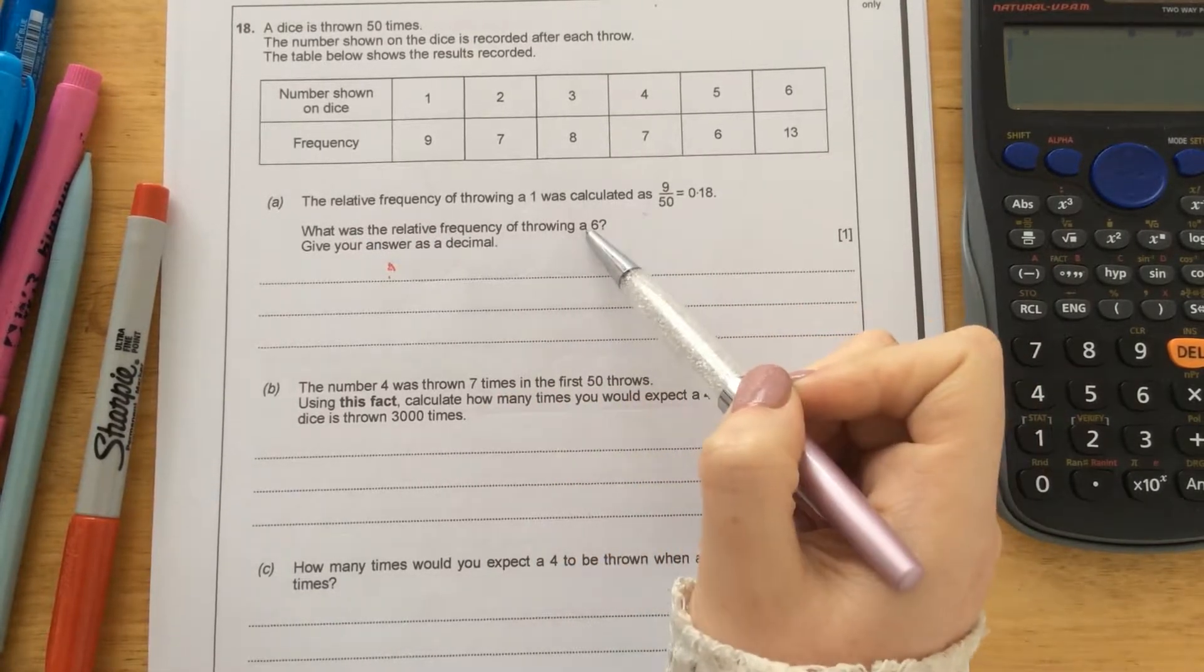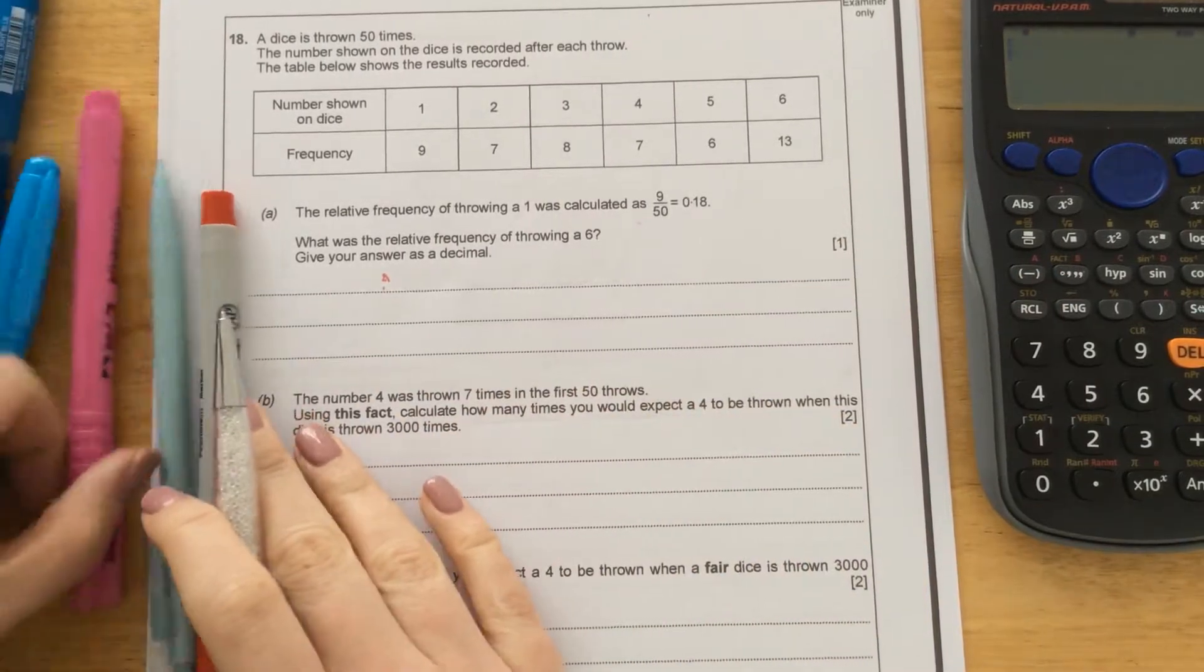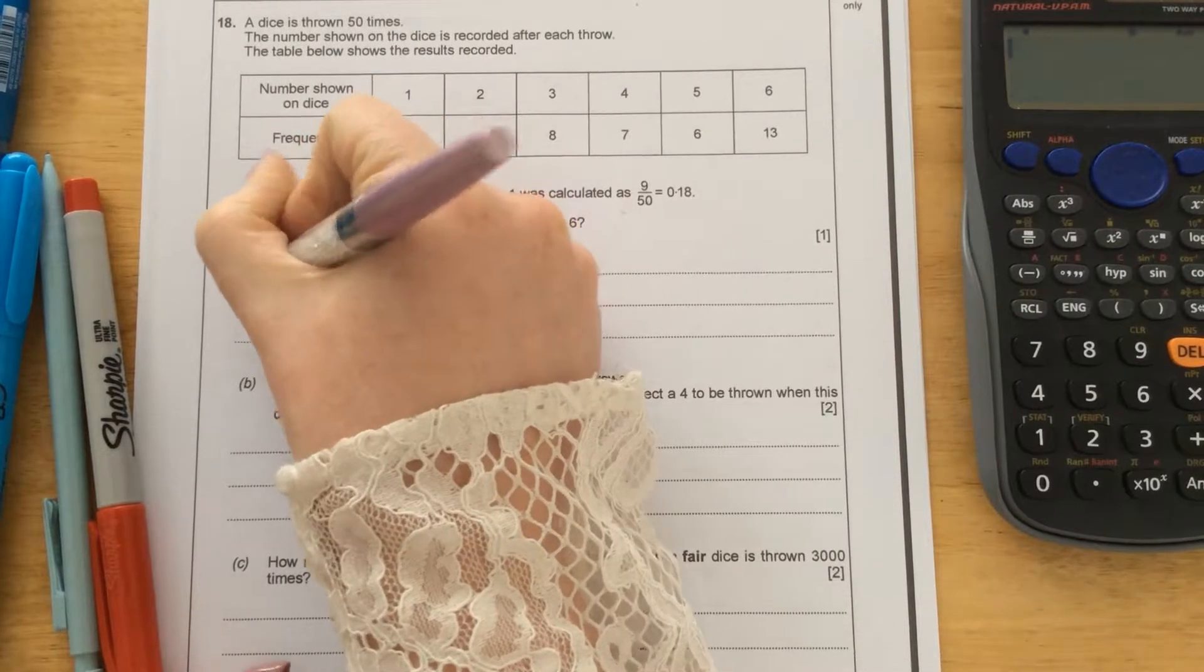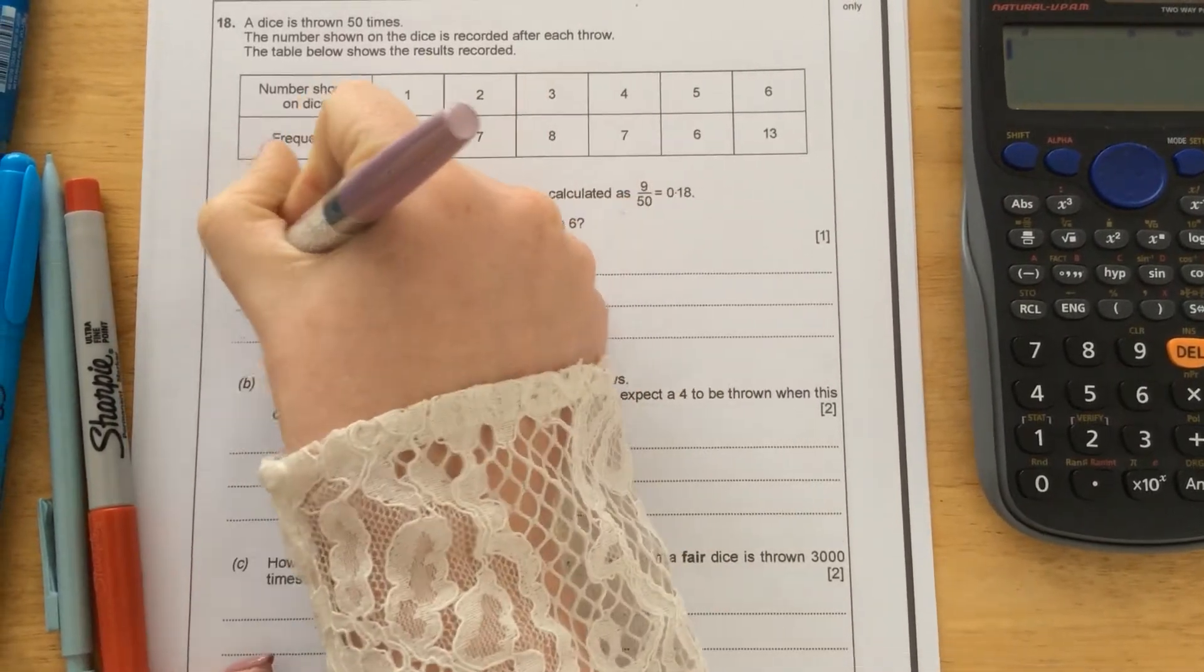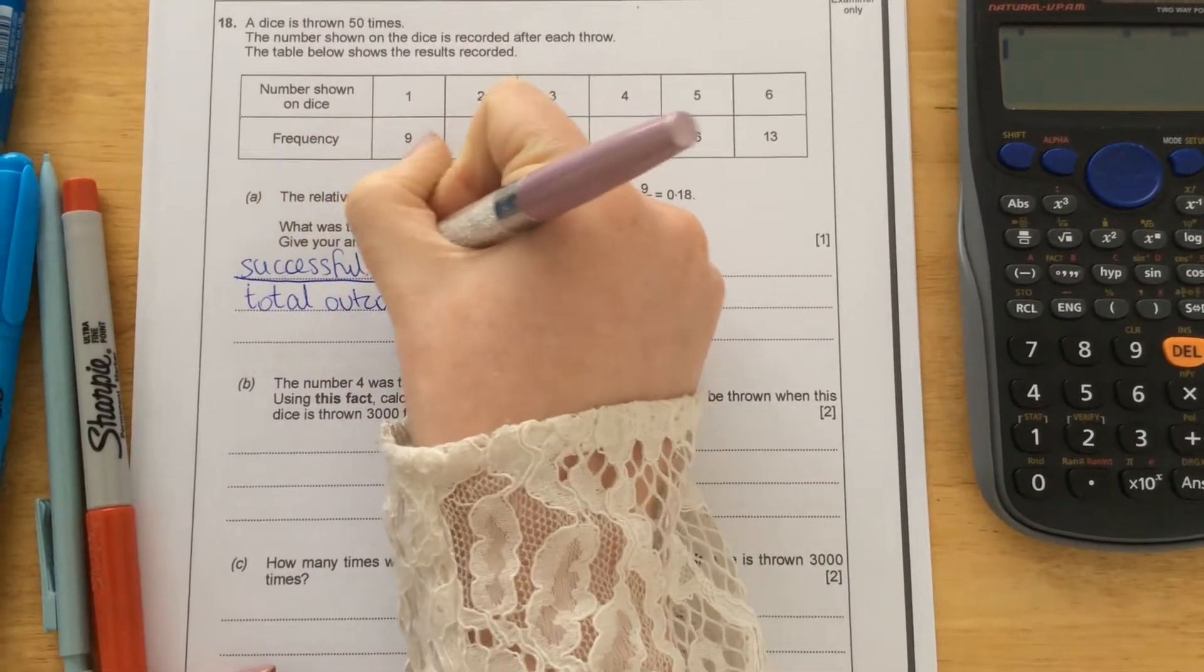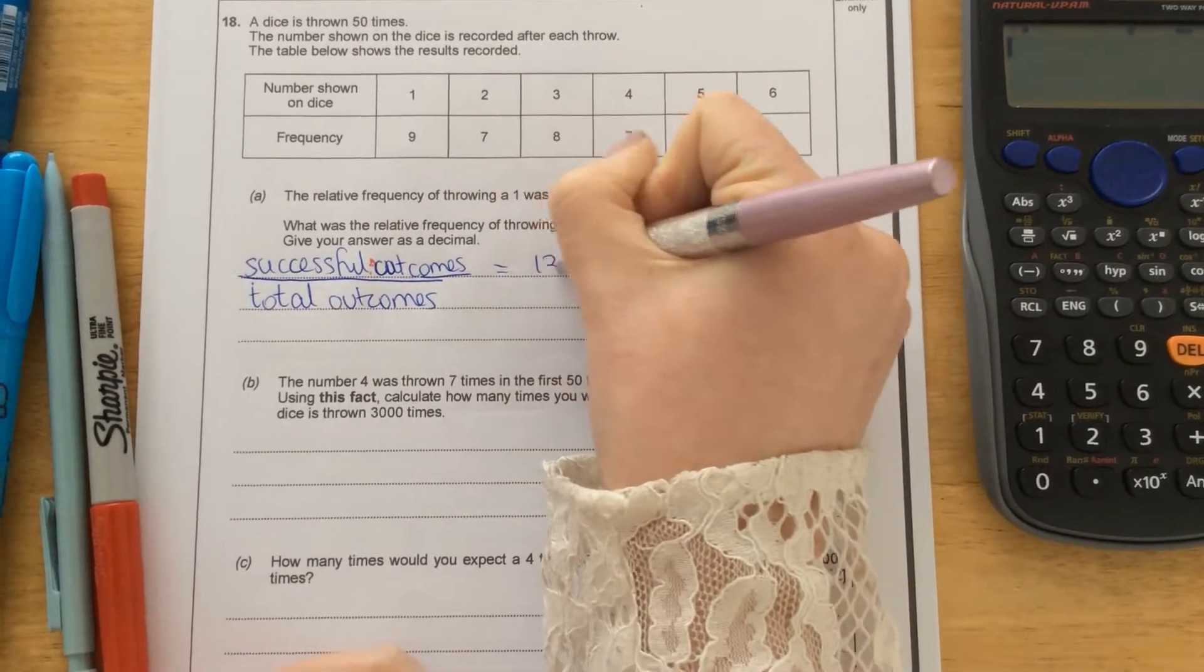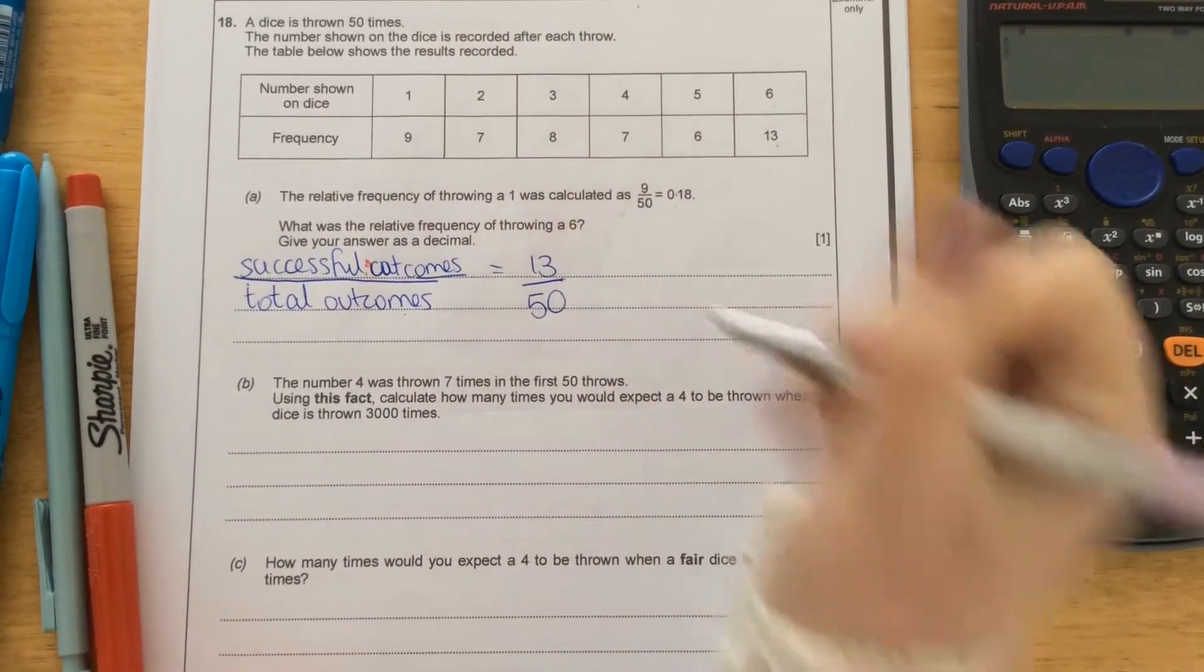What was the relative frequency of throwing a 6? Give your answer as a decimal. So the 6 is here, and that was rolled 13 times. So probability is successful outcomes on the top over total outcomes on the bottom. So the successful outcomes would be how many times the 6 was rolled. So that would be 13 out of the total, where the dice was thrown 50 times. So that would be 13 out of 50.